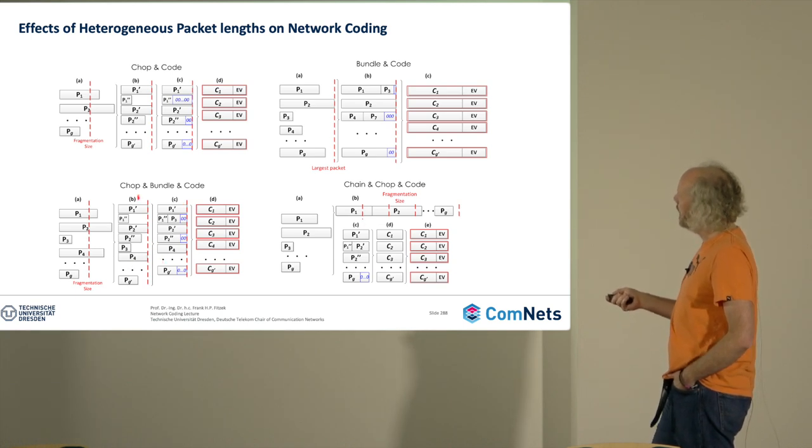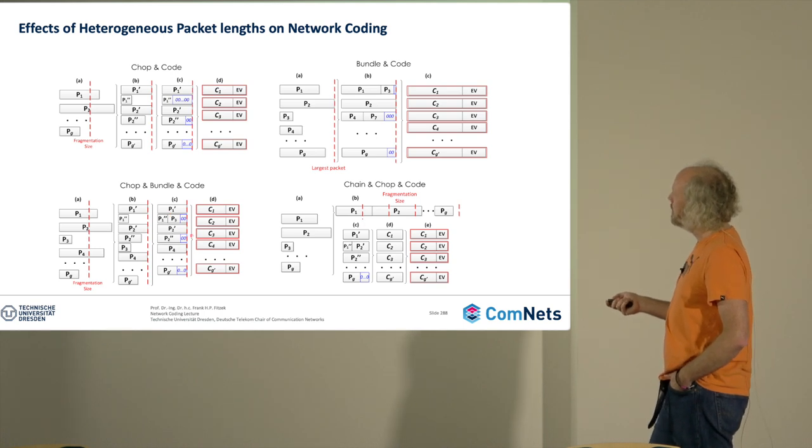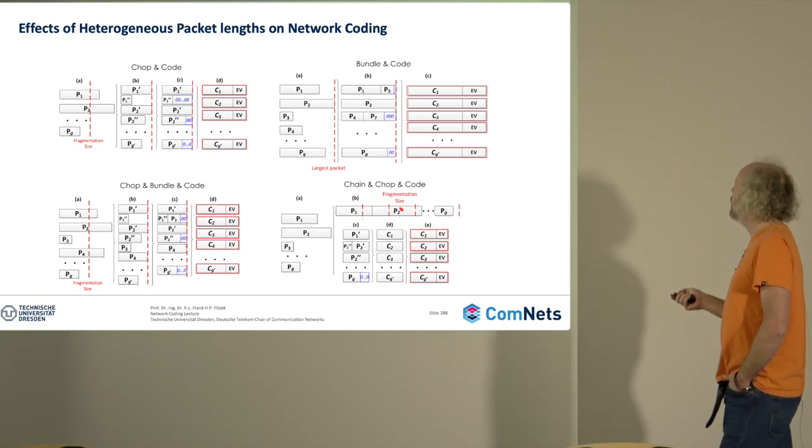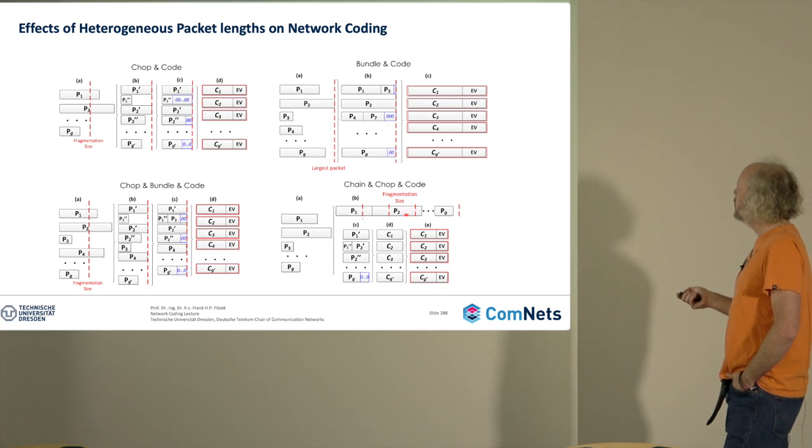This means you will just say okay, I will go down a little bit and then find an optimal fragmentation size in order to minimize the amount of padding that you have. And last but not least, you can even go for chain and chop, which means you just put the packets one after another and you have different ways of creating packets out of it. So you just say I have a fragmentation size, let's say 500 bytes, and whenever this is allowed I will just cut it.